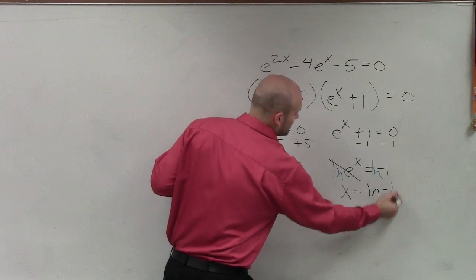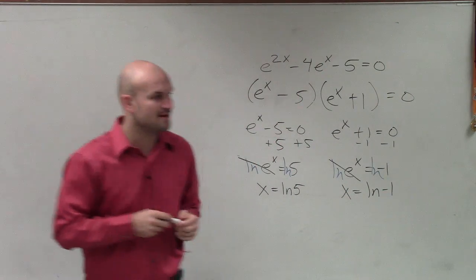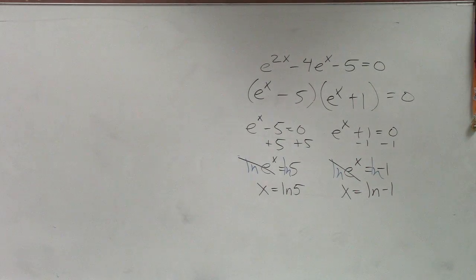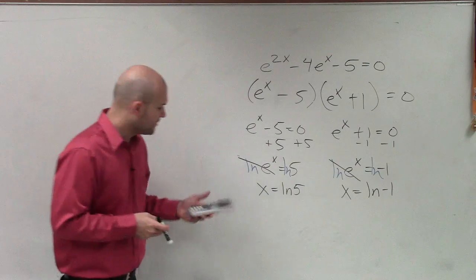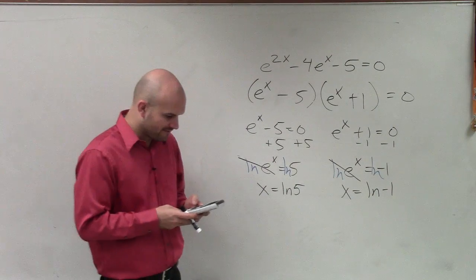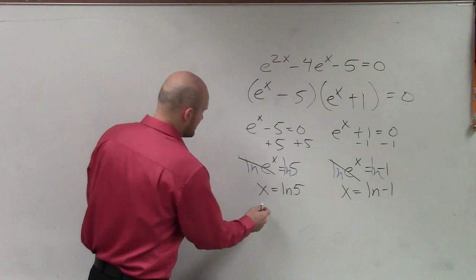x equals ln of negative 1. Now I do not have my calculator with me, but I'll borrow. Yeah, I'll get to you in just a second. So we have ln of 5. So I just do ln of 5. That's 1.61. I'll just round it.